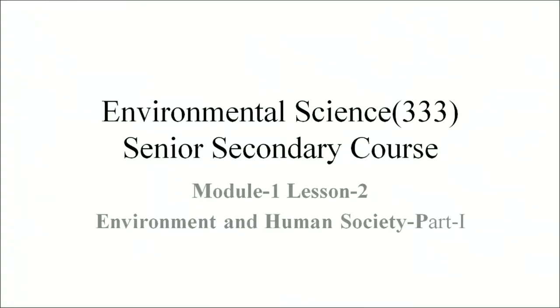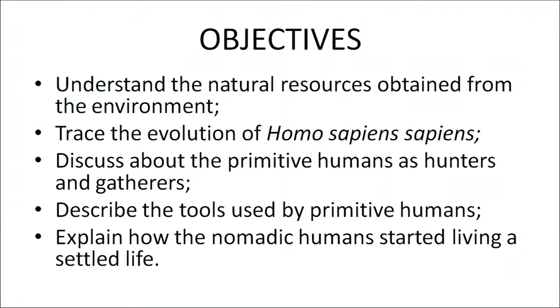Since environment is important in shaping human societies, let me discuss in detail about environment and society, which is lesson number 2 of the environmental science course. The objectives of this lesson are to understand the natural resources obtained from the environment, trace the evolution of Homo sapiens sapiens, discuss primitive humans as hunters and gatherers, describe the tools used by primitive humans, and explain how nomadic humans started living a settled life.